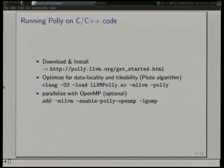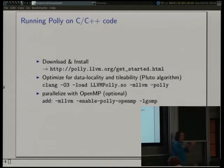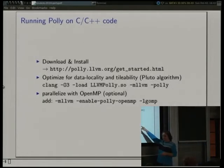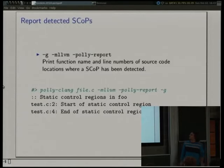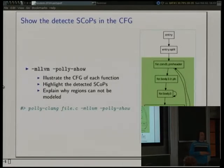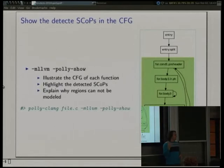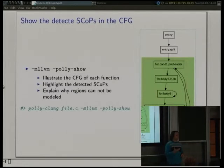If you want to try Polly, it's very easy - just download it, load it into the Explorer compiler, use -O3 -polly, and it will automatically optimize your C program. It will optimize for tileability and data locality, and if you enable polly-openmp it will also automatically detect parallelism and take advantage of it using OpenMP. There are a couple of flags you can use: polly-report tells you which code region found something interesting, and for people more involved in LLVM you can look into the LLVM control flow graph - we highlight the SCOPs we can detect.